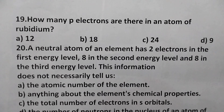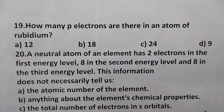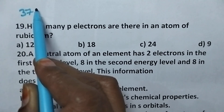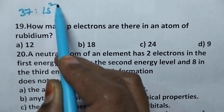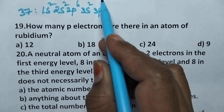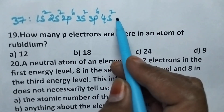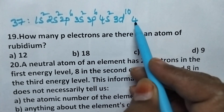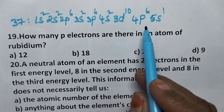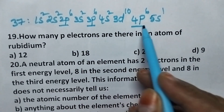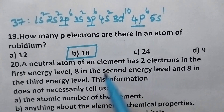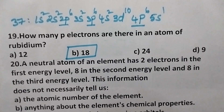How many P electrons are there in an atom of rubidium? Rubidium has atomic number 37 and its configuration is 1s², 2s², 2p⁶, 3s², 3p⁶, 4s², 3d¹⁰, 4p⁶, 5s¹. The P electrons are those in 2p, 3p, and 4p, giving altogether 18 electrons in P orbitals. So option B is the right answer.